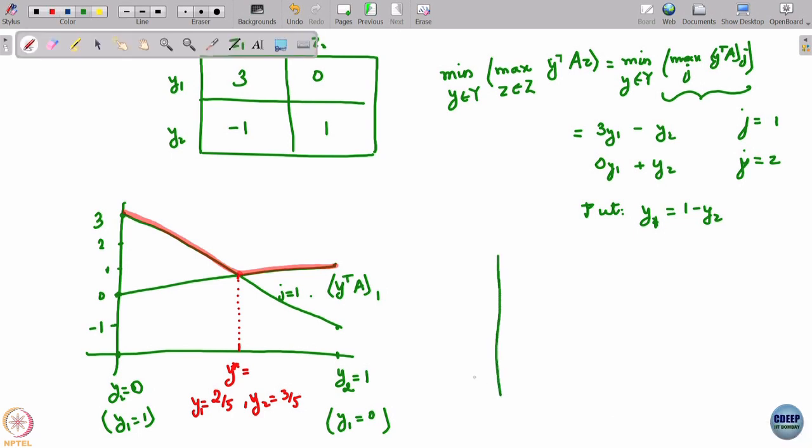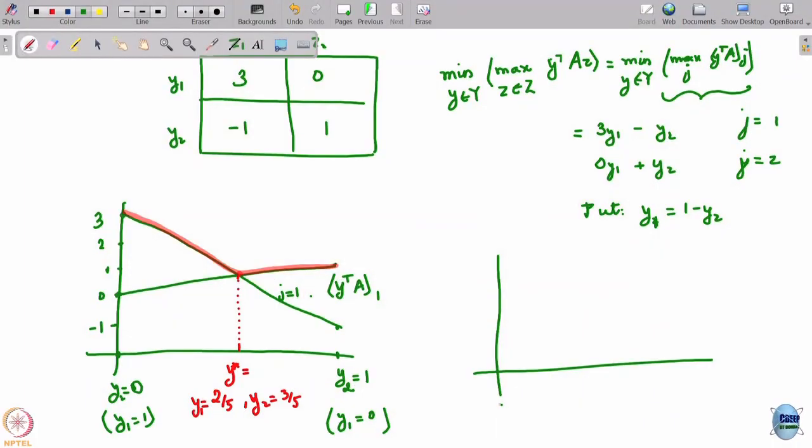Let's do the same thing here now for the column player. By the way, what does this tell us now? What is this y star? It is a security strategy and the component of the saddle point corresponding to the row player. So let's now do the same thing for the column player. For the column player again, I will plot this with respect to z. This is, let's say it is convenient to take z1 equal to 0 here, z1 equal to 1. In other words, z2 equal to 1 and z2 equal to 0. And now, can you tell me, again let me mark these out here. So let's say this as 3, 2, 1, 0, minus 1.